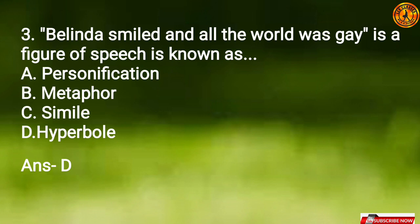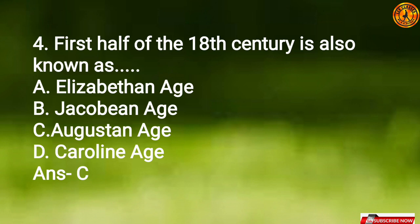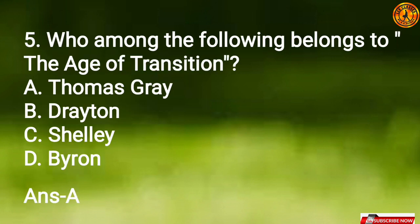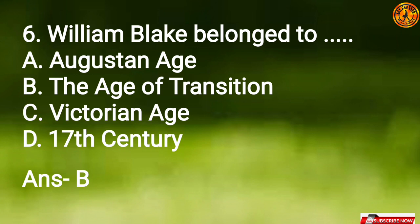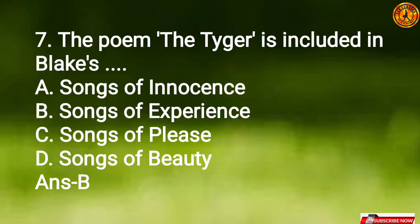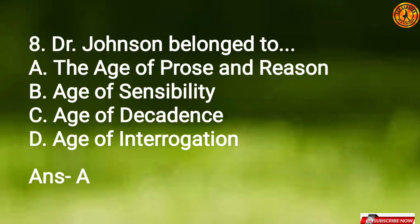Option D, hyperbole — jise ham log atishyukti alankar bhi kahte hain. Question 4: The first half of the 18th century is also known as Option C, the Augustan Age. Question 5: Who among the following belongs to the Age of Transition? Option A, Thomas Gray. William Blake belonged to Option B, the Age of Transition. Question 7: The poem 'The Tiger' is included in Blake's collection Option B, Songs of Experience. Question 8: Dr. Johnson belonged to Option A, the Age of Prose and Reason.